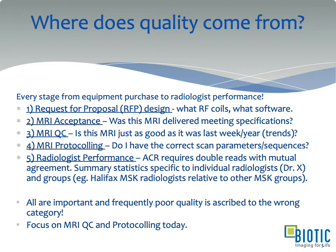Where does quality come from? There are five basic stages. The first is the RFP or request for proposal — not just which vendor, but specifics: what kind of RF coils, do we need 32-channel head coils, flex coils, cardiac software, liver elastography? It's the comprehensive selection and evaluation of components that determines which system and configuration you receive. The second component is acceptance: was the MRI delivered as specified, did you get all the parts, are they working, are the calibrations correct?